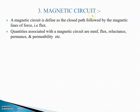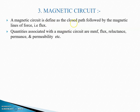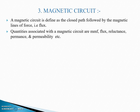Next — magnetic circuit. A magnetic circuit is defined as the closed path followed by magnetic lines of force, that is the flux. जैसे electric circuit में current की closed path होती है, वैसे magnetic circuit में magnetic lines of force यानि magnetic flux की closed path होती है। Quantities associated with a magnetic circuit are MMF, flux, reluctance, permanence and permeability etc.